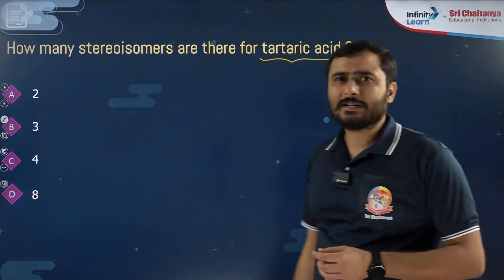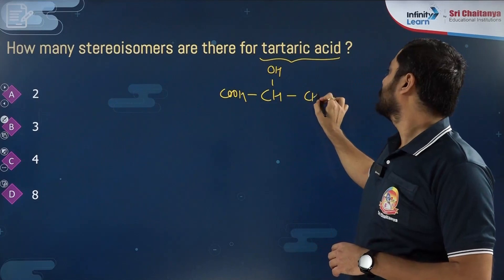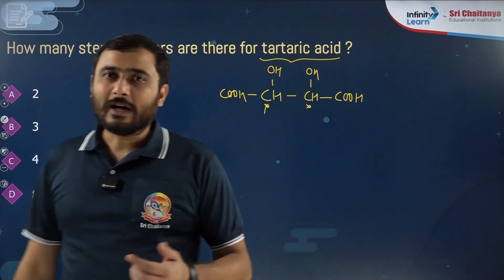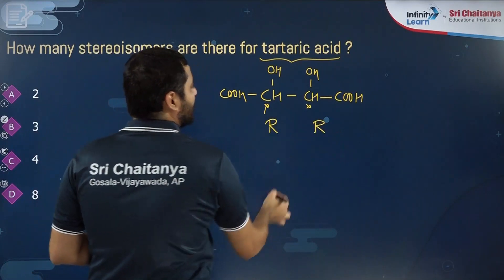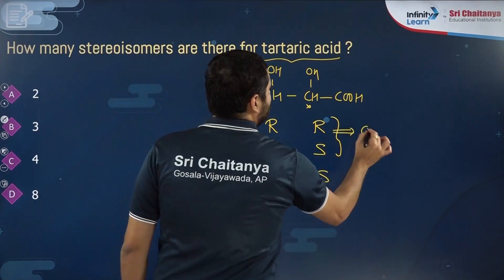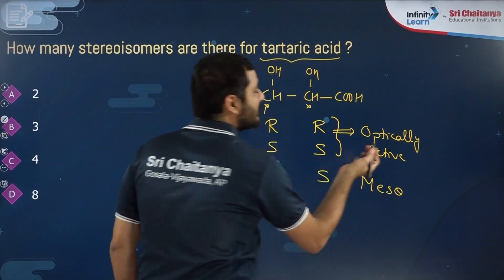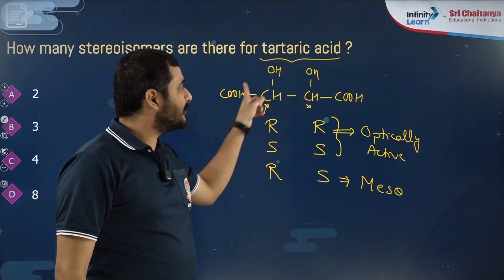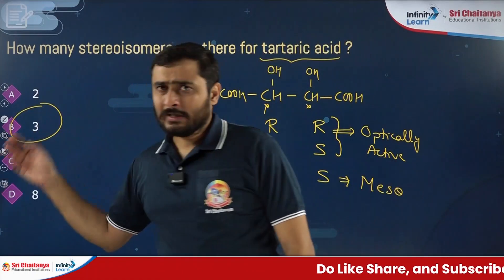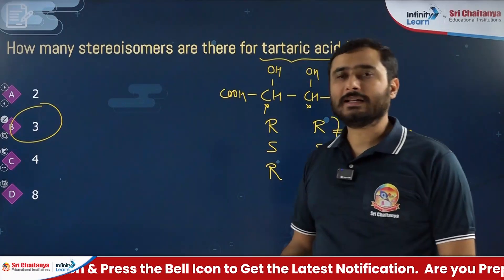Next: how many stereoisomers does tartaric acid have? Tartaric acid structure: HOOC-CHOH-CHOH-COOH — two chiral centers with identical substituents. Possible configurations: R,R (optically active); S,S (optically active); R,S (meso — optically inactive). Total stereoisomers = 3.